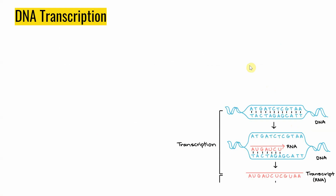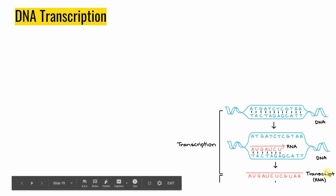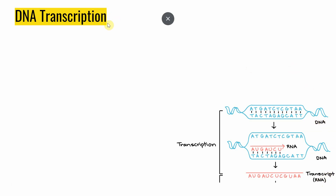In DNA transcription, it's the first part of our central dogma, and we're basically starting with DNA and we're hopefully going to end with a molecule of RNA. When we think about the definition of the word transcription, or to transcribe something, that means to copy something. So that's exactly what we're doing — we're going to be copying something.